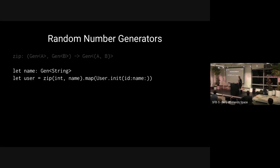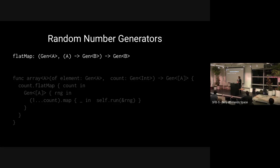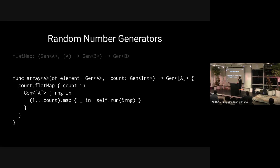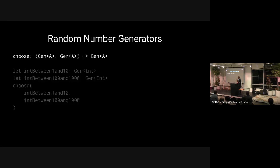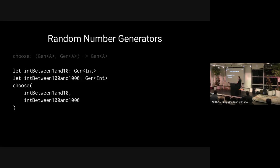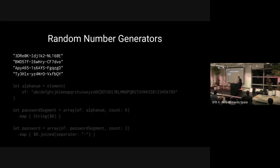You can also zip generators — take two generators, run them, and collect their values in a tuple. If you had a generator of strings in addition to a generator of ints, zip them and then map with a user initializer to get random users. You can flat map on generators, which is useful for running a generator to get a value and then doing additional randomness based off that first value. For example, if you wanted a randomly sized array of random elements, give it a random generator of A's and a random generator of counts, then flat map the count and fill it with random values. You can also combine two generators by randomly choosing one and running it.